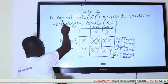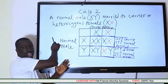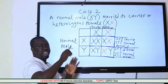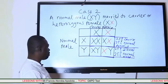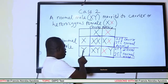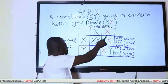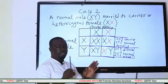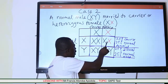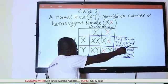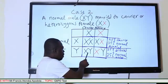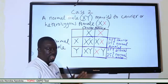Case two: a normal male married to a carrier female — where only one X chromosome is affected. Doing the crossing gives a normal female, a carrier female, a normal male, and a diseased male. The outcomes are: 25% normal female, 25% carrier female, 25% normal male, and 25% diseased male.